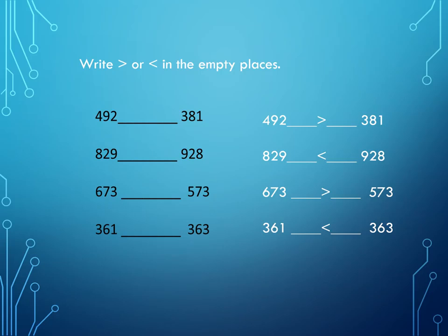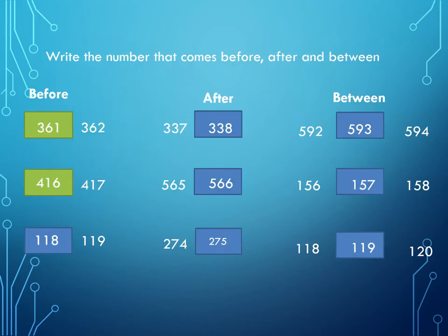Now write the number that comes before, after, and between. First we will learn before numbers. We have number 362. Now 3 is in hundreds, 6 in tens, and 2 is in ones. So 3 will remain the same, and we will count what comes before 62. Yes, 61 comes before 62.